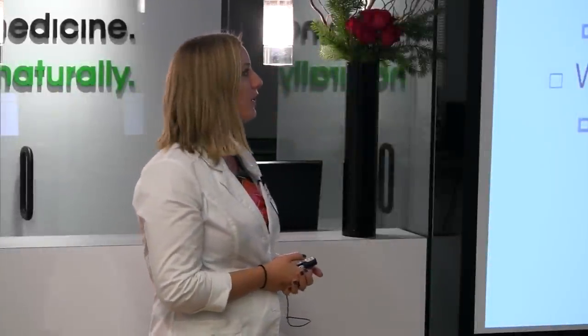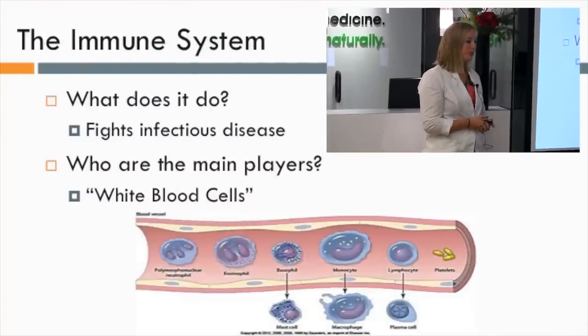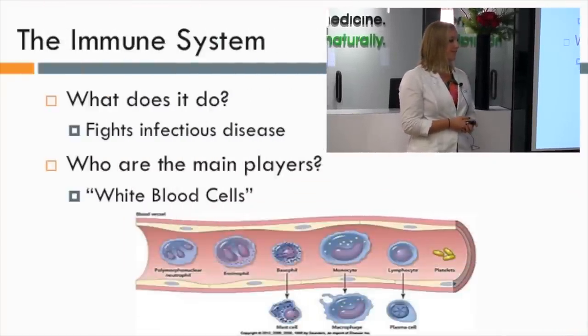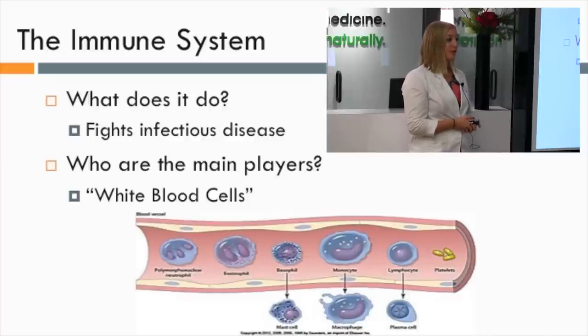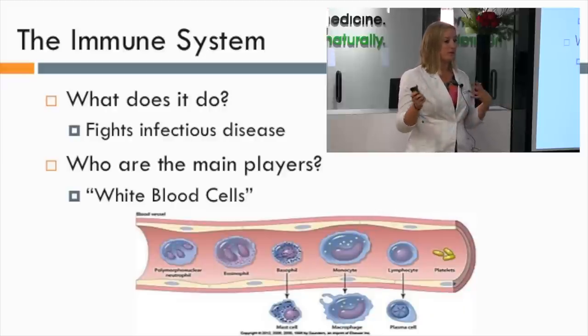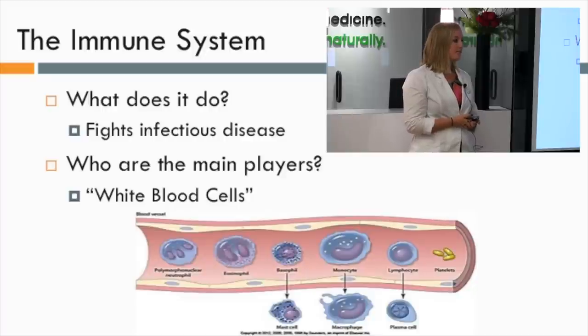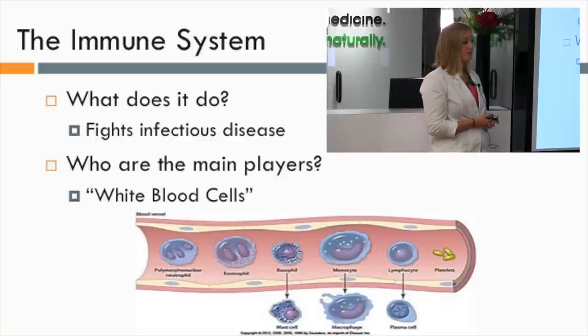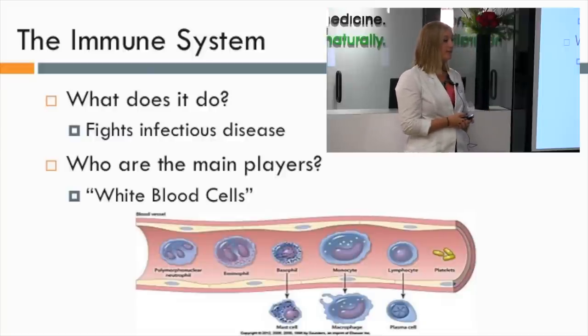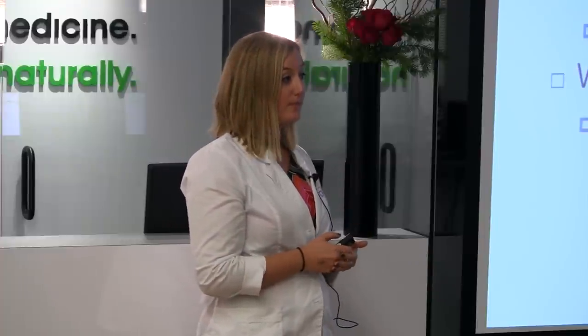So first of all, what does the immune system do? We talk a lot about the immune system and think about it kind of vaguely — we hear words like white blood cells, we think about getting a fever. When you think of a failure of the immune system, sickness, disease, specifically more acute diseases — things that come and go — although the immune system is very involved in chronic disease as well. But at the very basics, what it does is it fights infectious disease.